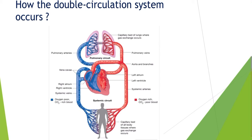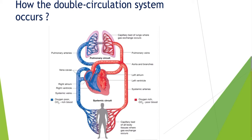The atrioventricular valves open as the atria get ready to push the blood down through the ventricles. The atria contract together, pushing the blood downward so that the oxygenated blood is now present in the left ventricle.